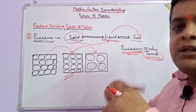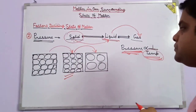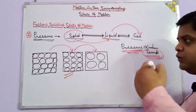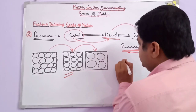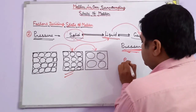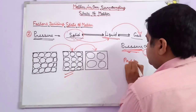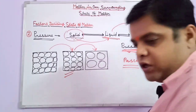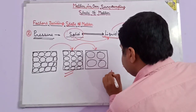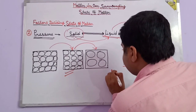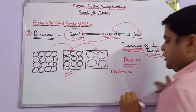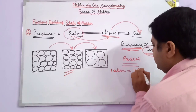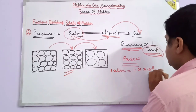These pressure conditions are very important. The unit for pressure is Pascal. One atmosphere equals 1.01 × 10⁵ Pascal. With the help of a barometer, we can measure atmospheric pressure. Our body creates pressure from all sides, which is the atmospheric pressure.